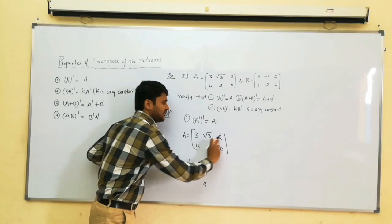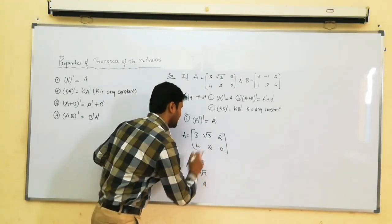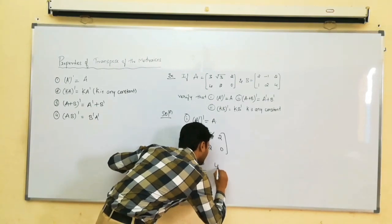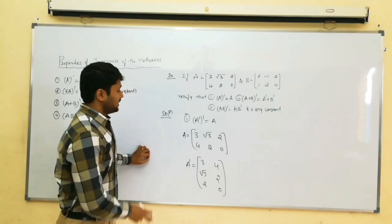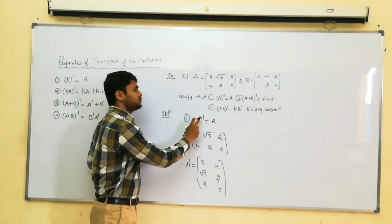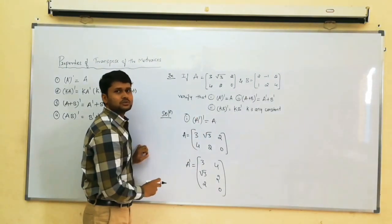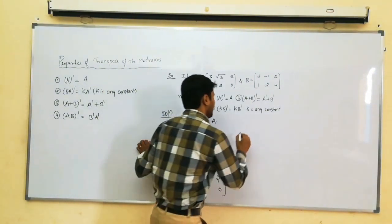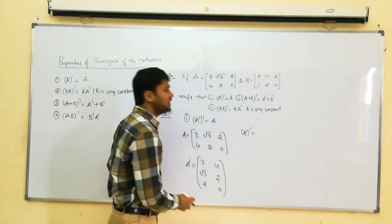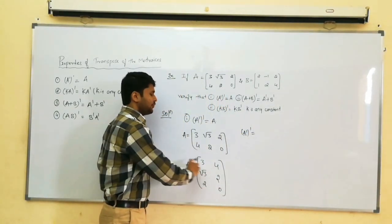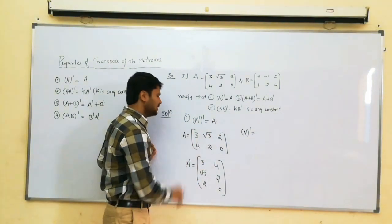I am writing the first row as the first column and the second row as the second column. Already you know the definition of transpose of a matrix. Next, A transpose is done. Now we have to find A transpose whole transpose — again interchanging rows and columns: first row as first column, second row as second column, third row as third column.